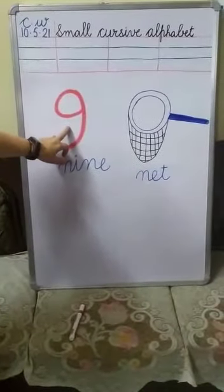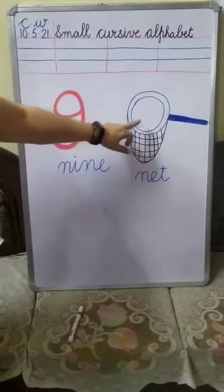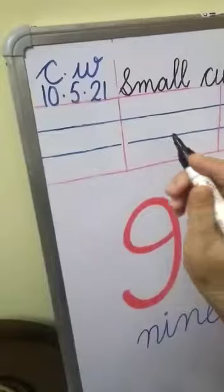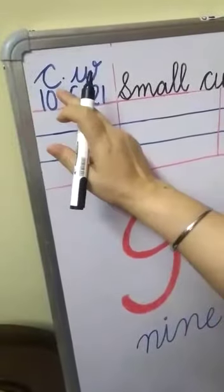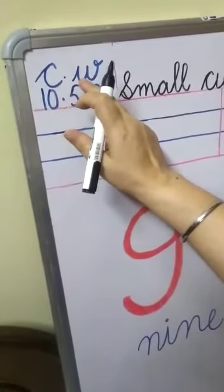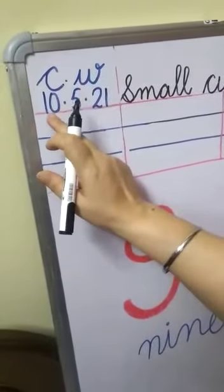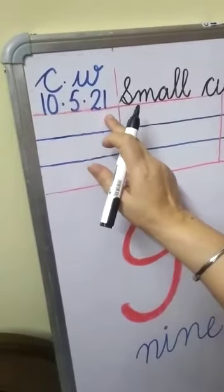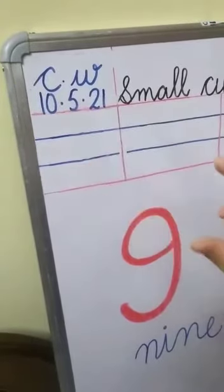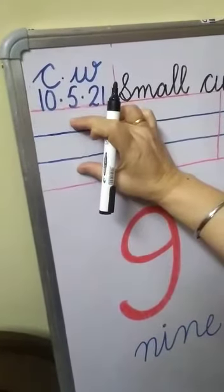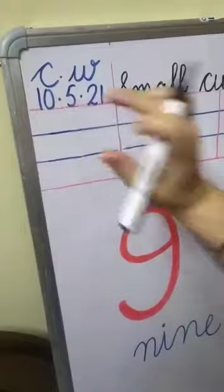N for 9 and for net. Write down date C.W., date is 10.5.21, and it will come in two middle lines.